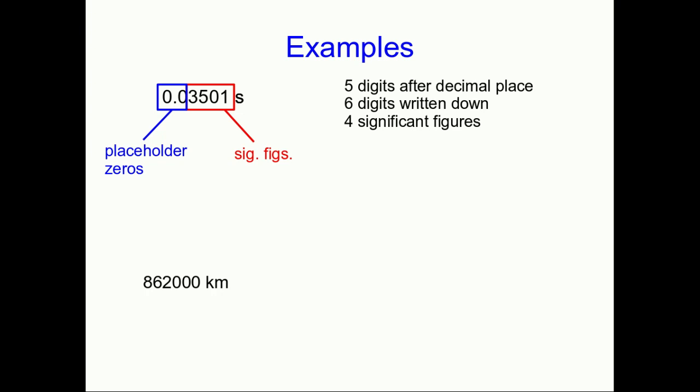They're there to tell you that that first digit, the three, is in the one hundredths of a second place. So they're establishing the order of magnitude. And so this is the same as writing 3.501 times 10 to the negative two seconds. And if you write it that way, it's clearer that it has four significant figures.